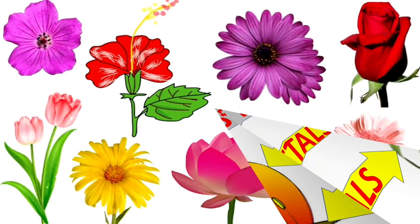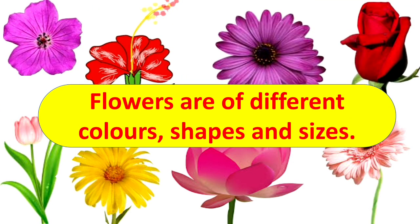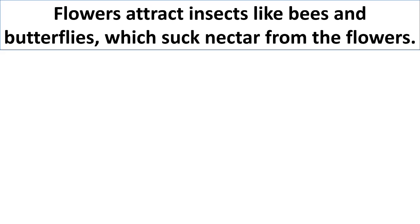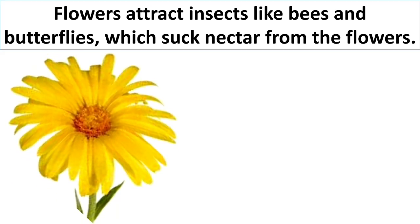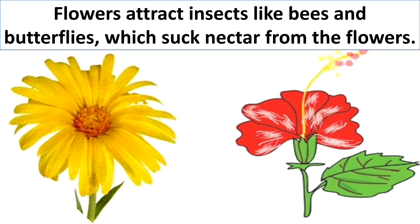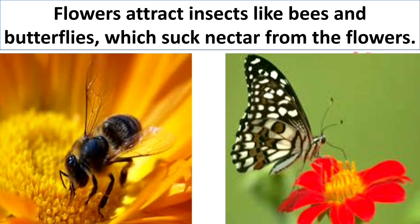Flowers are of different colors, shapes and sizes. Flowers attract insects like bees and butterflies which suck nectar from the flower. Nectar is a sweet smelling liquid which attracts insects toward the flower.